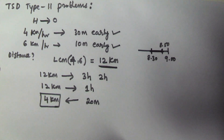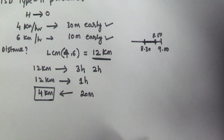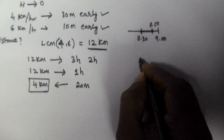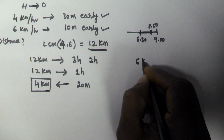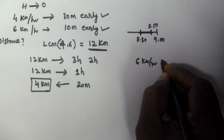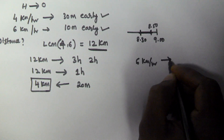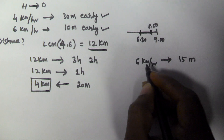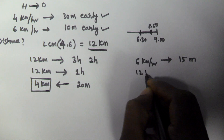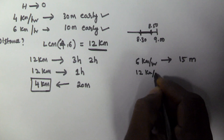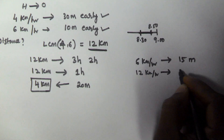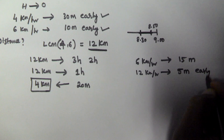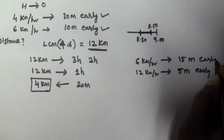Let us see another example of the same type. On the first day he travels at 6 km/h and reaches the office 15 minutes early. On the second day he travels at 12 km/h and reaches the office 5 minutes early. In this case also, both arrivals are early.